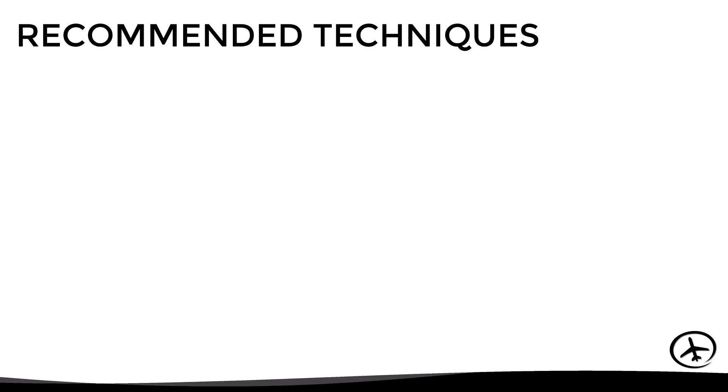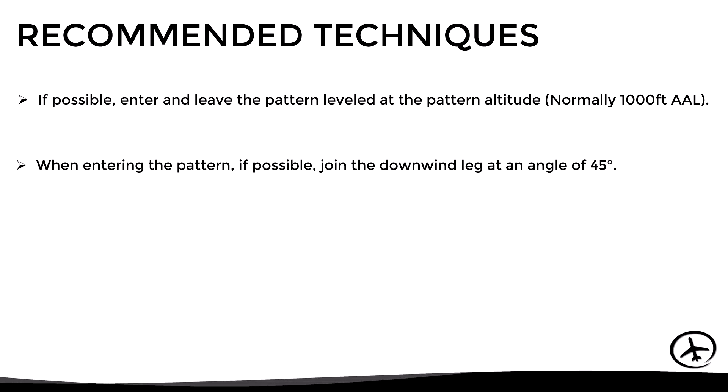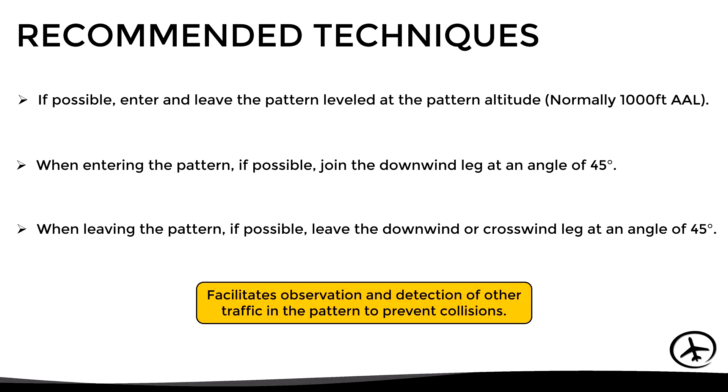In order to increase safety and avoid potential conflicts with other traffic, there are some recommended techniques: if possible, enter and leave the pattern leveled at the pattern altitude; when entering the pattern, if possible join the downwind leg at an angle of 45 degrees; and when leaving the pattern, if possible leave the downwind or crosswind leg at an angle of 45 degrees. All these procedures facilitate observation and detection of other traffic in the pattern to prevent collisions.